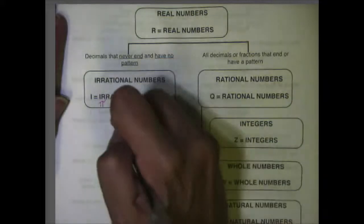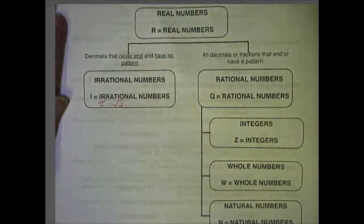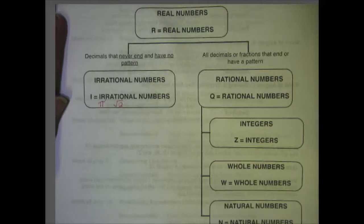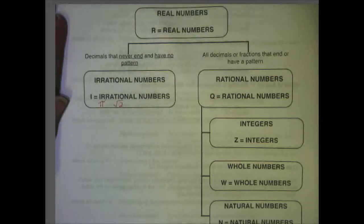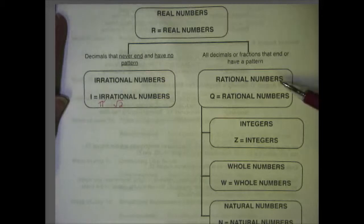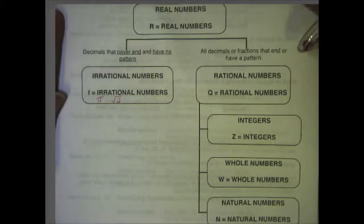Other irrational numbers are going to be like the square root of 2. There are several others and we'll look at those later, but if you figure out what the square root of 2 is, again, it is a decimal that doesn't end and it has no pattern. Rational numbers are the ones that we're going to use probably most often during Algebra 1, so we do need to know the different types.